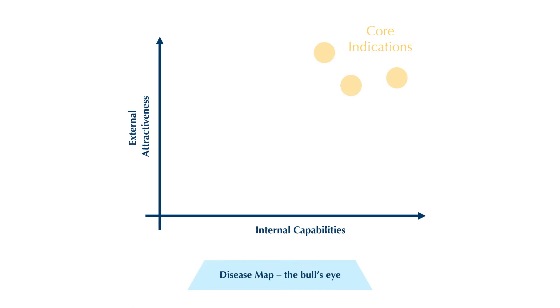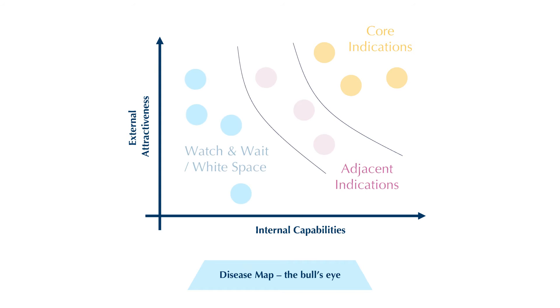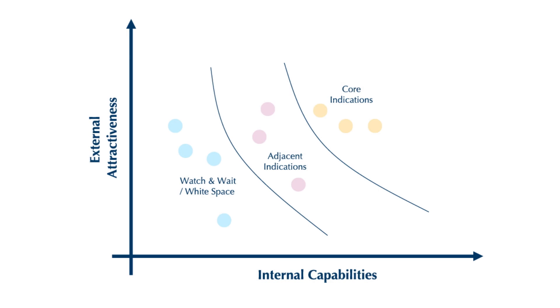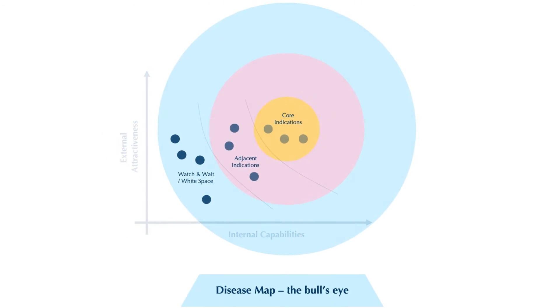When this is done, it's straightforward to consolidate the external opportunity assessment with internal capabilities in a very simple matrix. It provides the rationale as to which indications are already fully supported across the organization and which ones still have some way to go. This matrix helps to position indications into core — where we have high external attractiveness and internal capabilities — adjacent, and white space, where we have lower external attractiveness and/or lower internal capabilities.